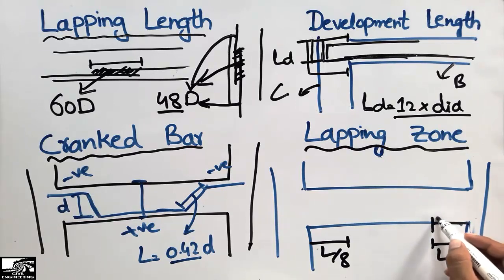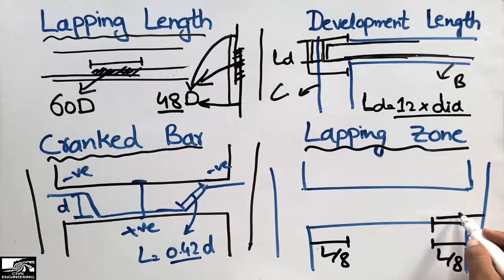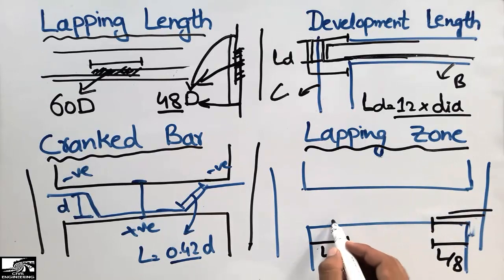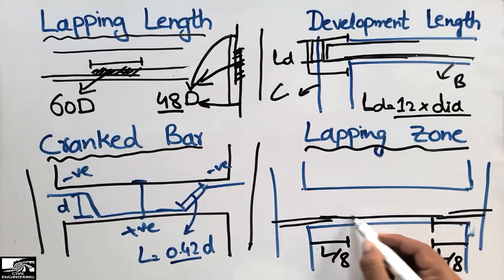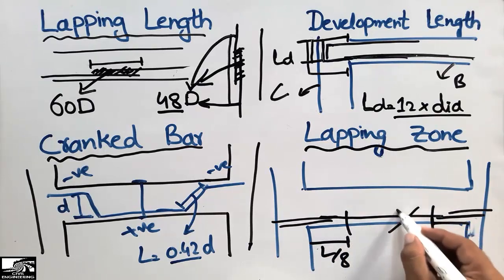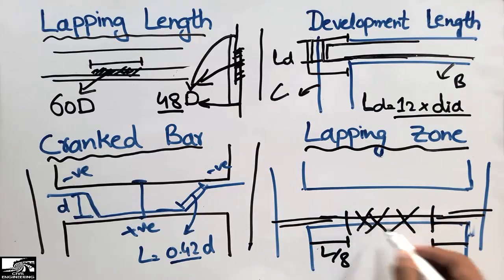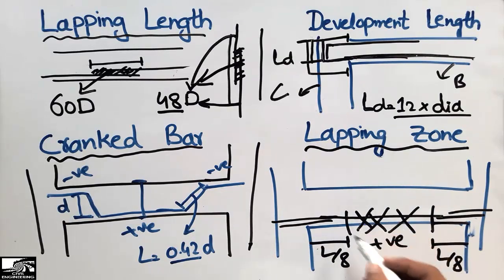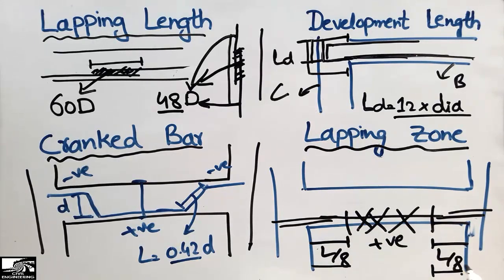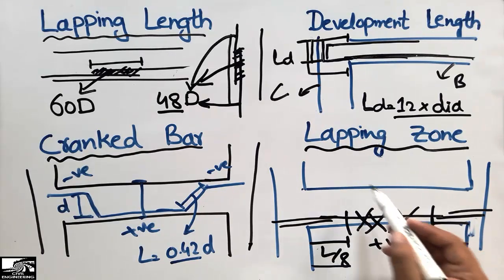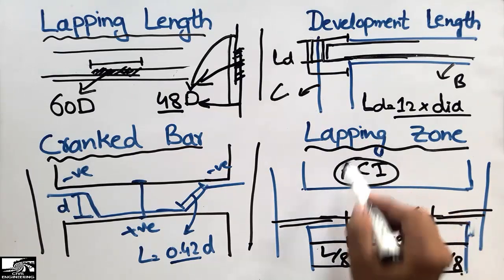We can overlap steel bars only within those L/8 zones near the supports. We are not allowed to overlap steel bars in the middle portion of the beam because the positive bending moment is maximum there, and it is too risky to provide a lapping zone at that location. This requirement is provided by the American Concrete Institute (ACI) code.